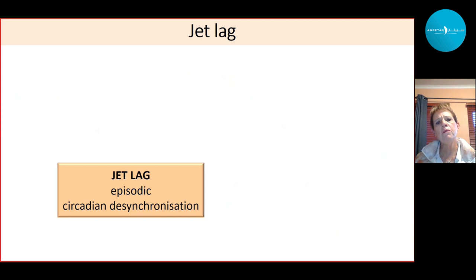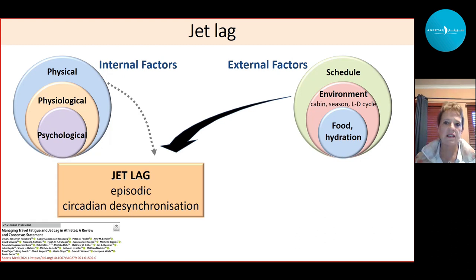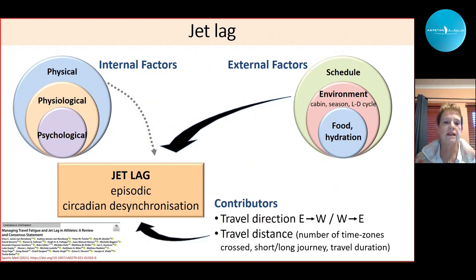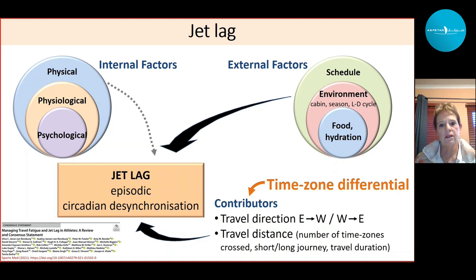Jet lag is episodic circadian desynchronization. The same internal factors — physical, physiological, and psychological — come into play, as well as external factors such as the environment at the destination, the schedule, and the types of food available. Travel direction (east or west) and the number of time zones crossed — referred to as the time zone differential — are also important.